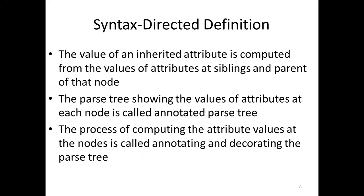What is an Inherited Attribute? An Inherited Attribute's value comes from either the siblings or the parents of a node in the parse tree. So we have two types: Synthesized Attributes and Inherited Attributes — and we can do parsing and annotating using both.